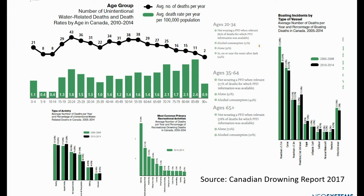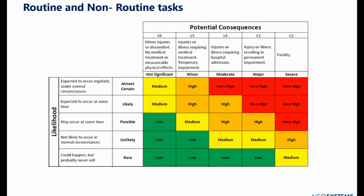We're so worried about the shark that sometimes we forget about the water, where the water is actually a higher risk. If we do the risk matrix on the shark — we're from Canada, not surrounded by any water, so the potential for getting eaten by a shark is essentially zero. But for analogy purposes: it's a rare occurrence with a probably fatal outcome, so you can see in the matrix that comes out as a medium risk. If we look at the jellyfish, it's unlikely but could still happen, so the jellyfish is going to be high risk.